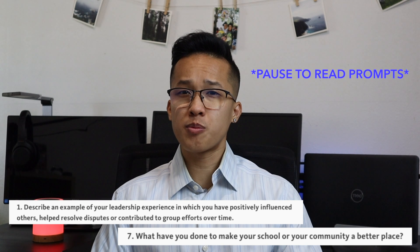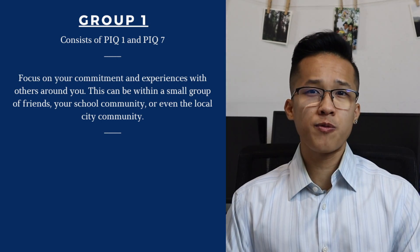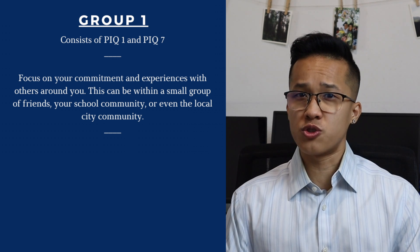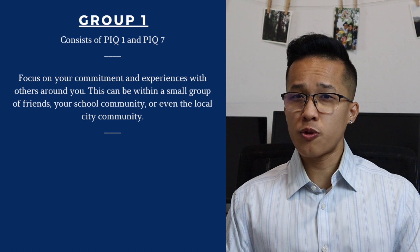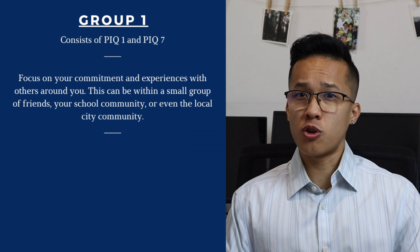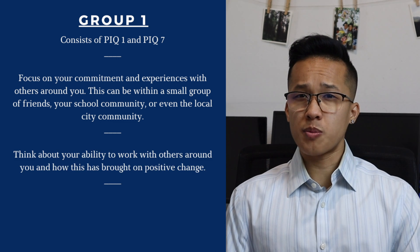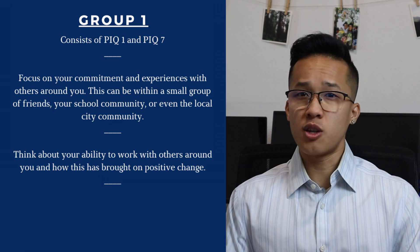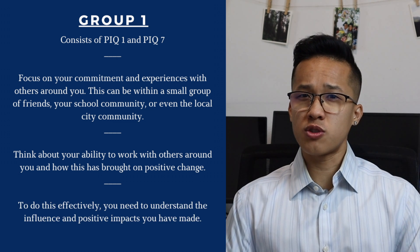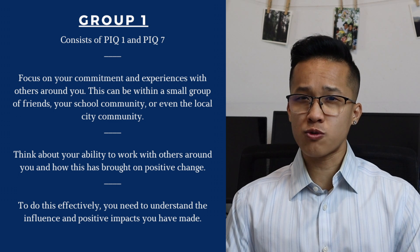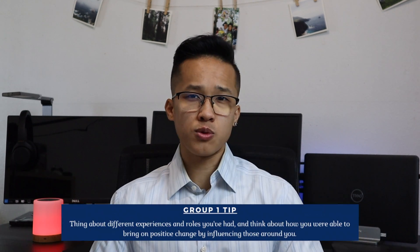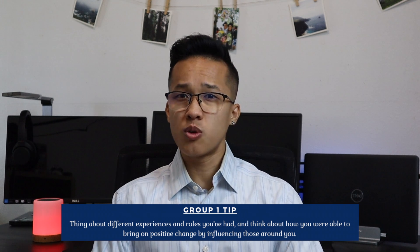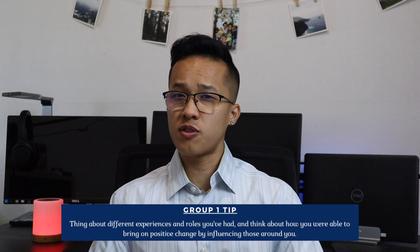The very first group includes PIQ number one and PIQ number seven. For these questions, you really want to focus on your commitments and experiences with others around you — within your small group of friends, a larger group of friends, your entire school community, or maybe even your local city community. For these prompts, you really want to think about your ability to work alongside others and how that ability has been able to bring positive impact. Think about your influence and how it affects others. For example, if you were a class president, what did you do to make your entire school better? Or maybe you were a team captain — what did you do exactly that positively influenced others around you?